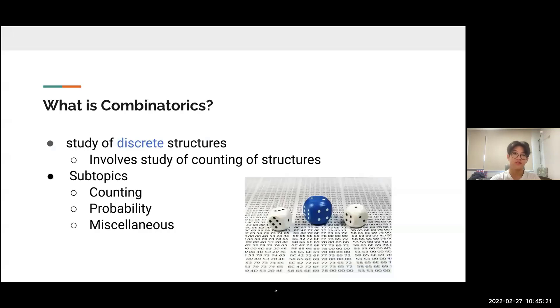First, let's start with the definition of combinatorics. What is combinatorics? It's the study of discrete structures. For those not familiar with the word discrete, it means involving two or more independent variables. Combinatorics involves the study of counting of structures.